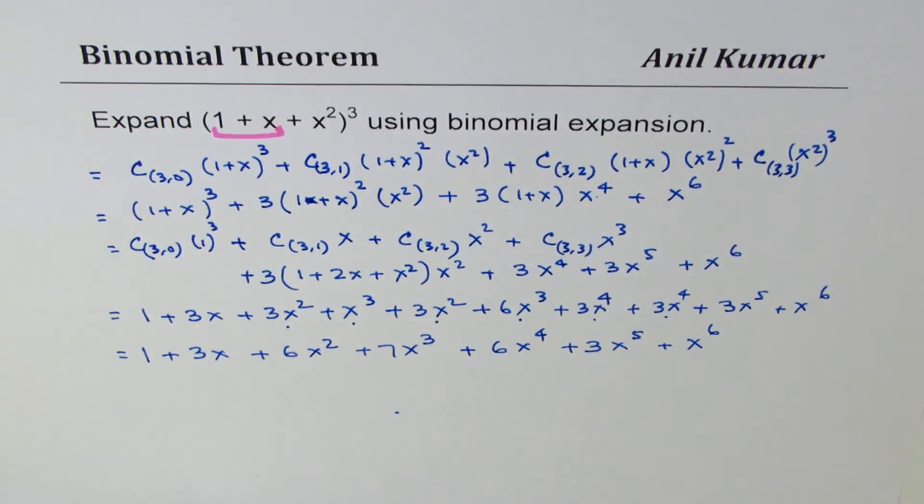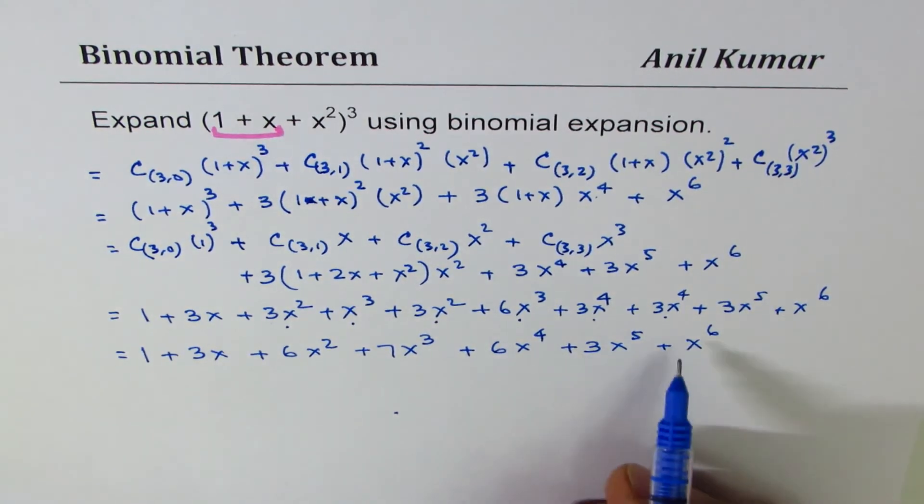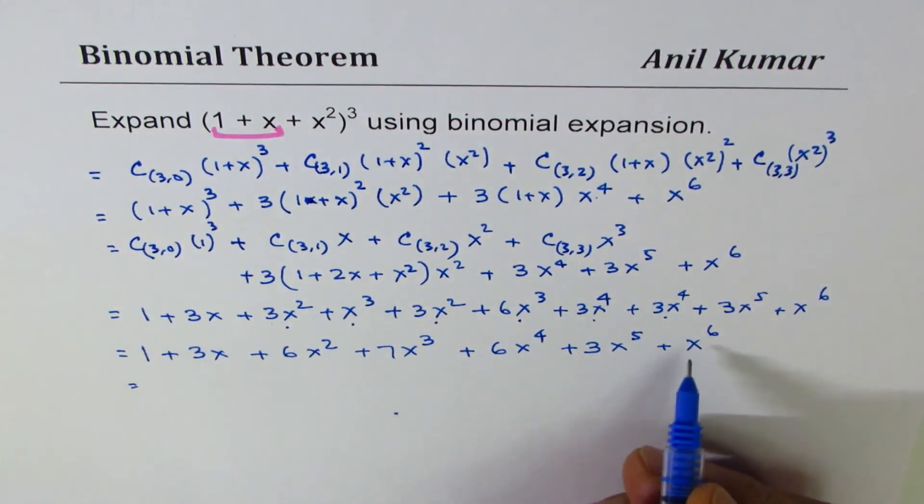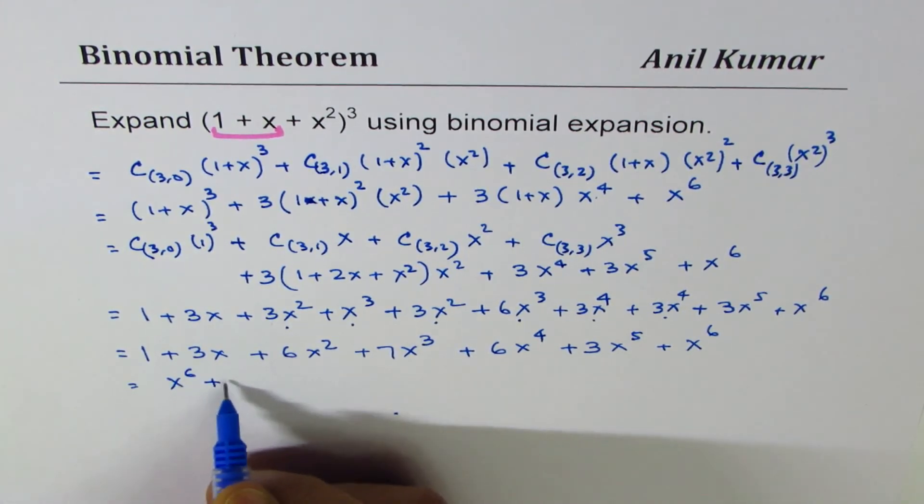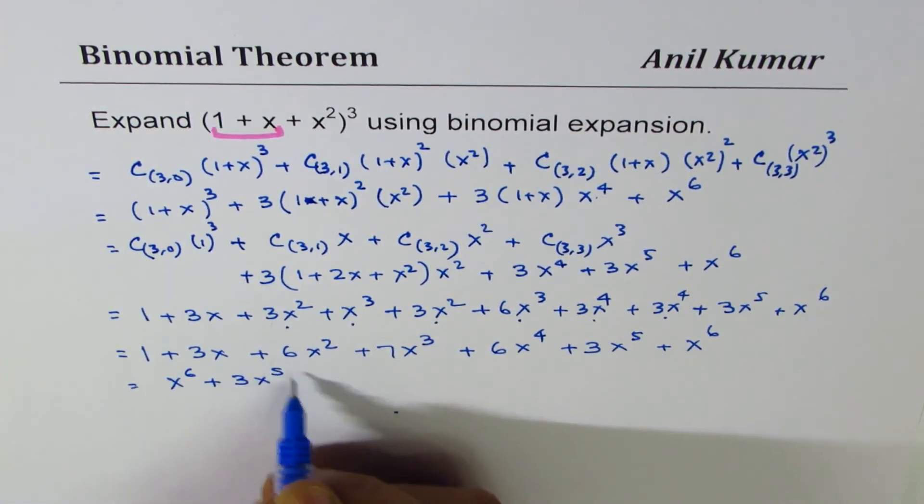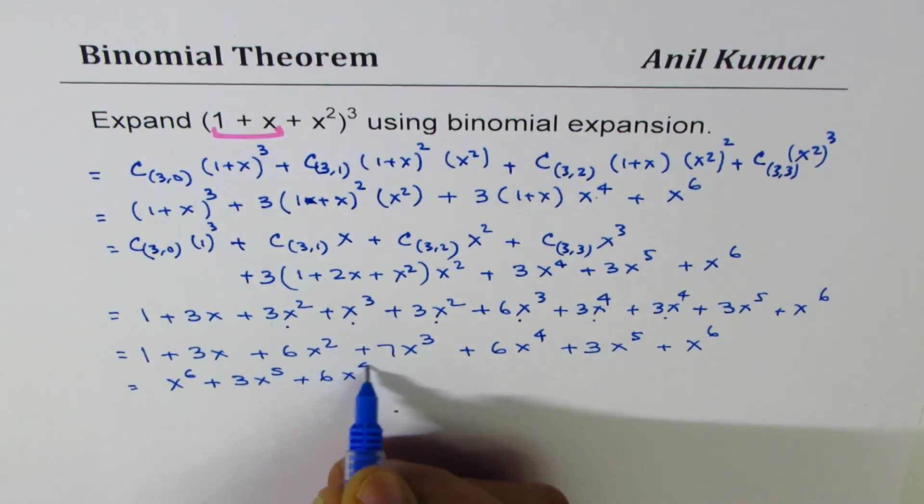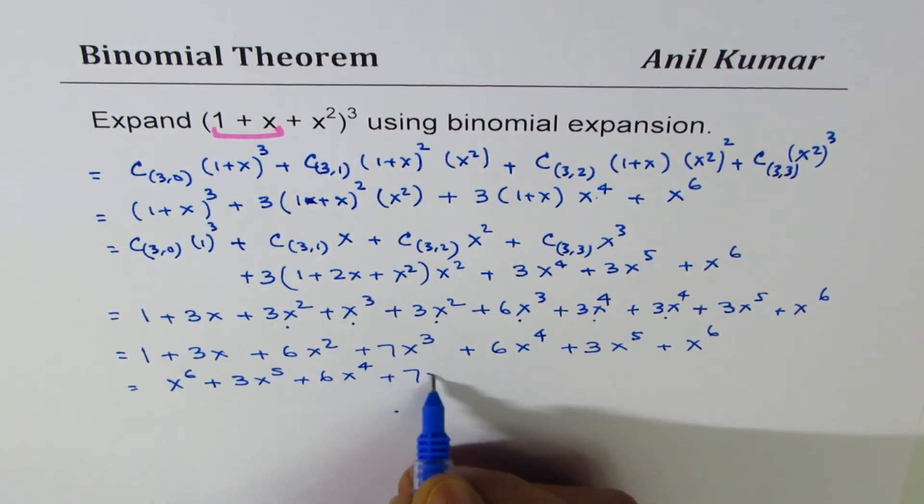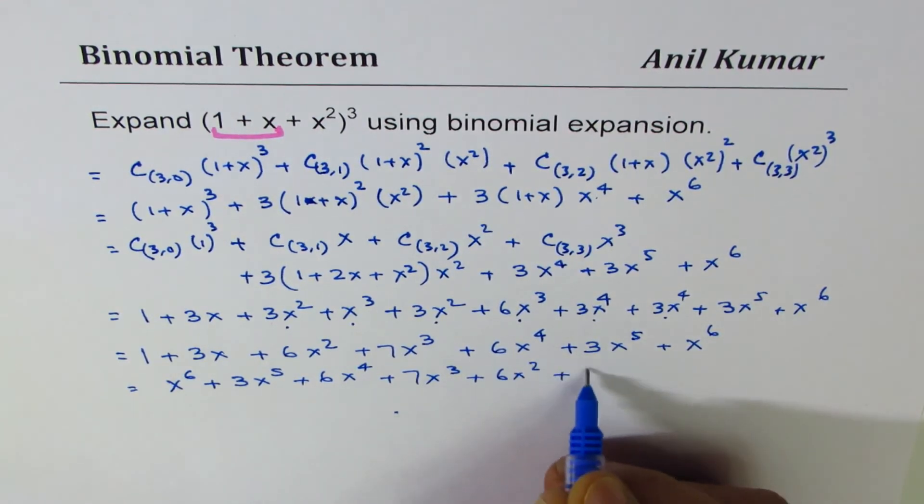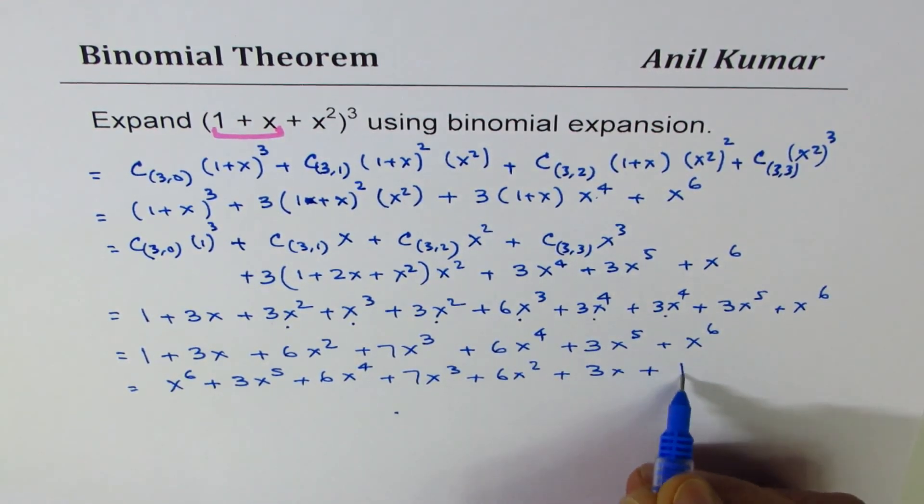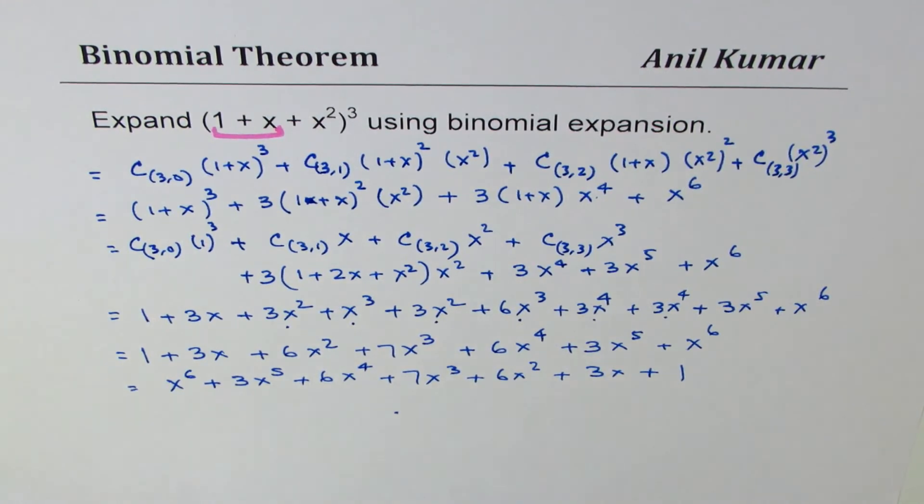So at the end we get all these terms. You can arrange them in order starting with the highest power: x⁶ + 3x⁵ + 6x⁴ + 7x³ + 6x² + 3x + 1. So that is how you could actually expand a trinomial with the help of binomial theorem or binomial expansion.